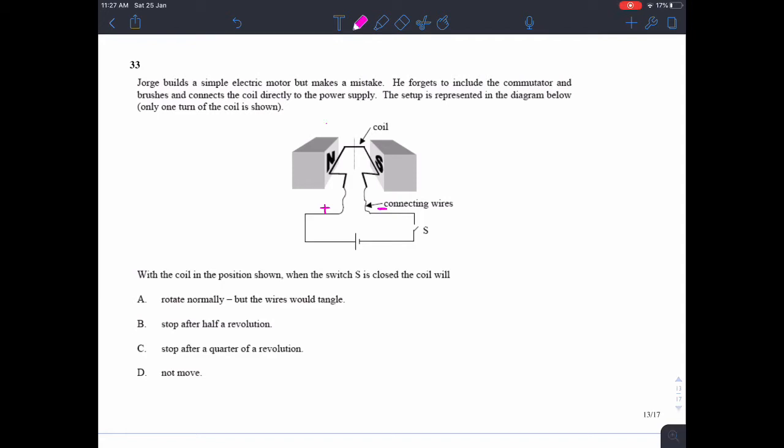So we've got first finger field. So the field is going from north to south. Second finger current, current goes from positive to negative. So that's going into the page. So first finger field, second finger current, so the force of this side is going to be going downwards.